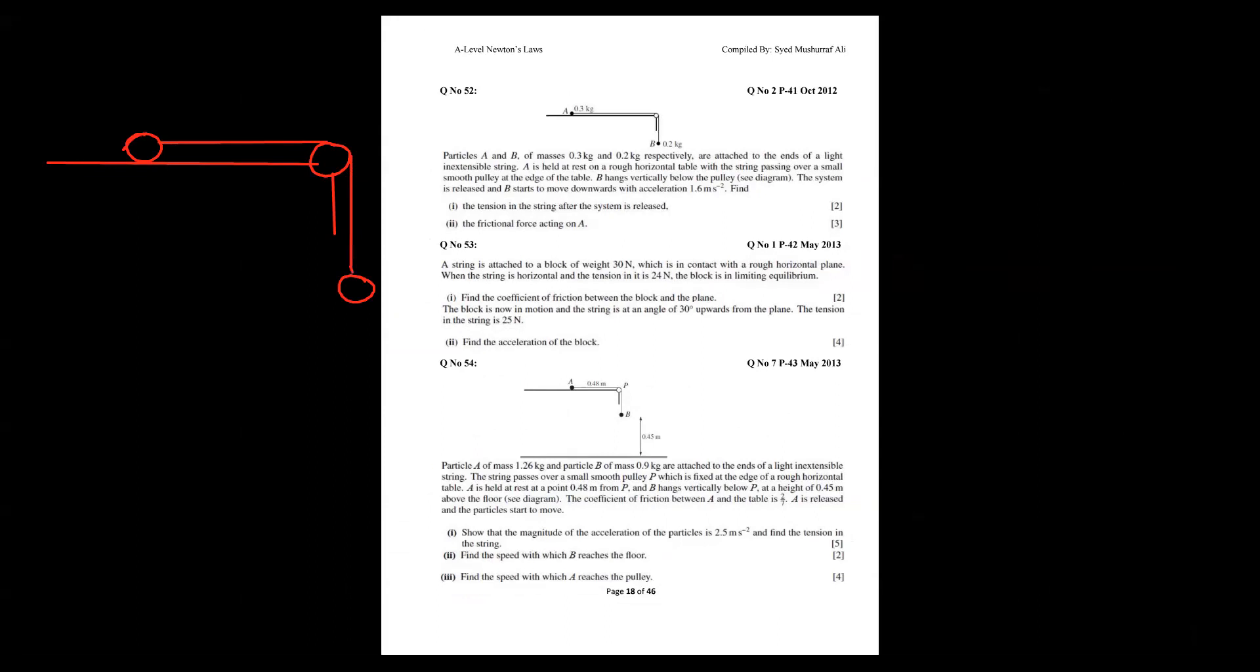Now I can show you the weight components. Let me change the color. This is weight acting up and down, this is downward acting. This is weight component for particle A. The mass is 0.3, so 0.3 times 10 gives you 3 newtons. Particle B is 0.2, so 0.2 times 10 becomes 2 newtons.